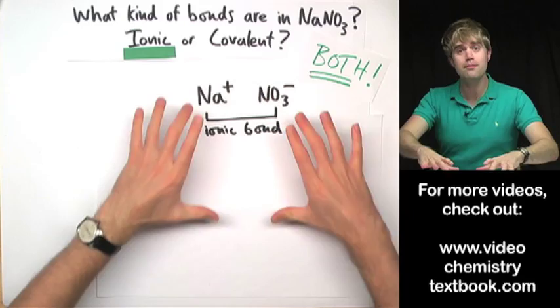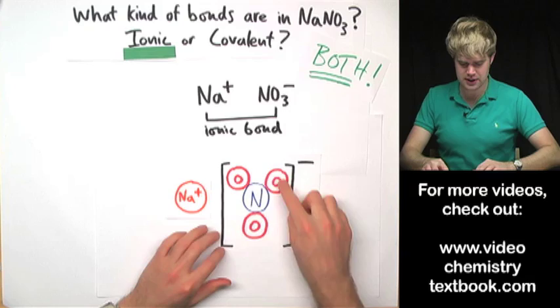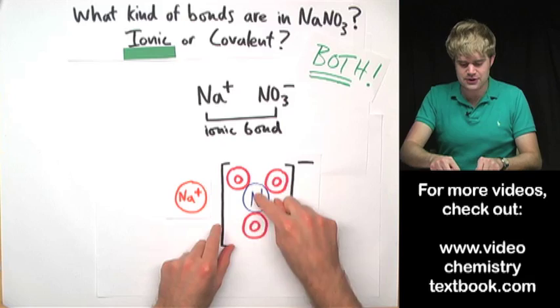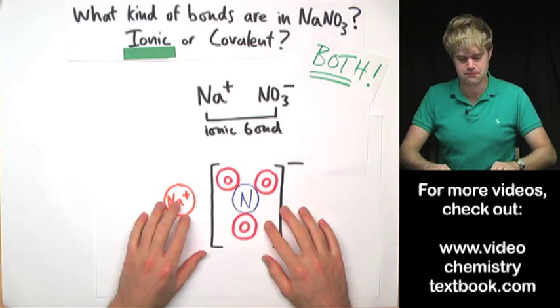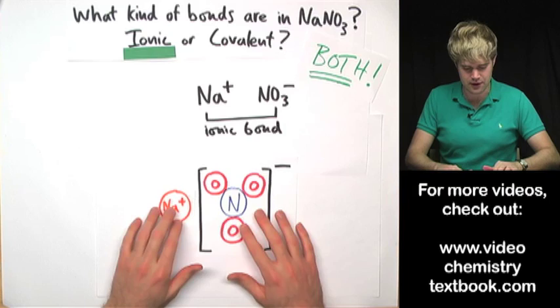So let's zoom in on this so that we can see the actual atoms. Here's the Na plus and now here's nitrate. Nitrate's a polyatomic ion which means that it has a whole bunch of atoms stuck together in a clump and then this whole clump has a negative charge. So here's the thing, as we've said ionic bonds hold these guys together but what holds the atoms together in the nitrate clump?